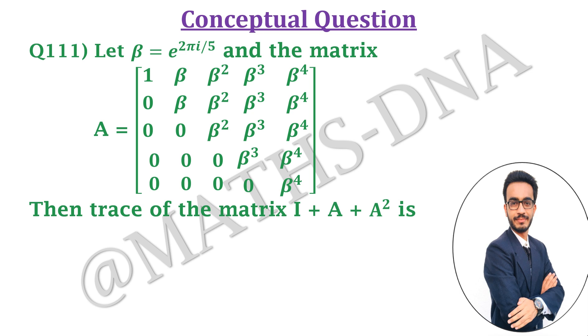1, β, β², β³ and β⁴. Then the trace of the matrix I + A + A² is (I is a 5×5 identity matrix). The options are a) 0, b) 1, c) 5 and d) -5.